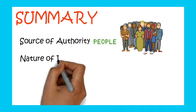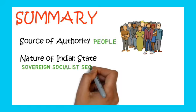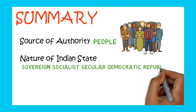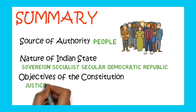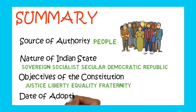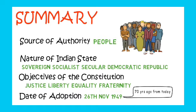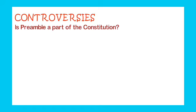Summary: Source of authority — the people. Nature of the Indian state — sovereign, socialist, secular, democratic republic. Objectives of the Constitution — justice, liberty, equality, and fraternity. Date of adoption — 26 November 1949. It came into effect as a republic on 26 January 1950.